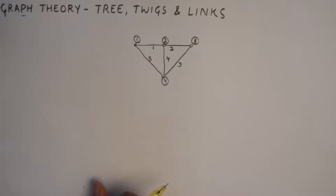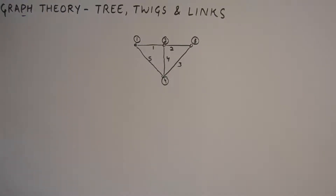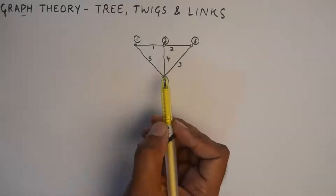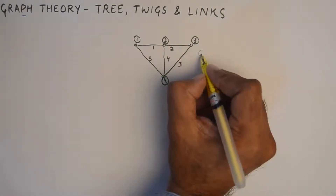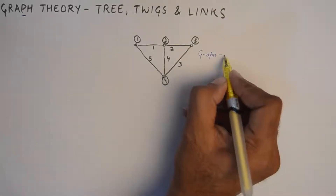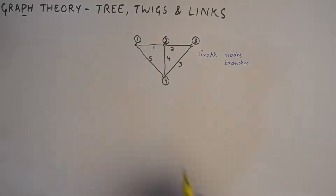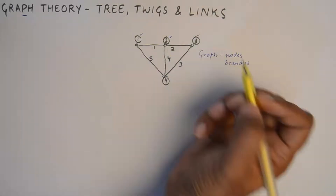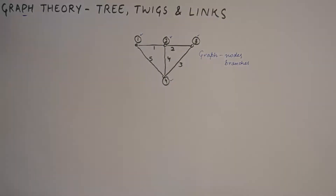We'll need to understand the term 'graph' first. Once we know what a graph is, we can derive trees from it, and then we'll see what twigs and links are. So in other words, a graph is the superset of trees, twigs, and links. A graph is a simplistic representation of a network. Looking at this figure, it represents nodes and branches of a network. Nodes are represented using numerals with circles — this graph has four nodes — and branches are represented using numerals.